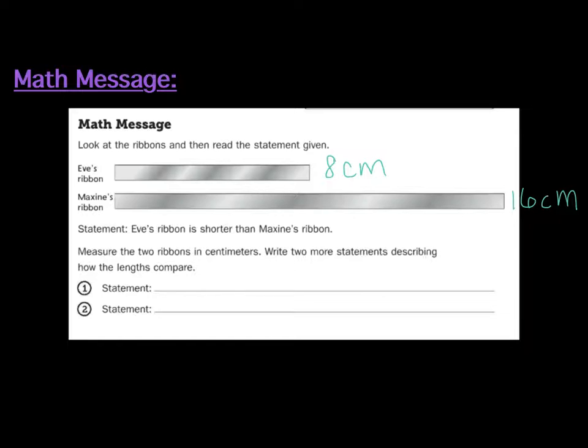Okay, so I went ahead and measured the ribbons for you. So let's say that Eve's ribbon is 8 centimeters and Maxine's ribbon is 16 centimeters. So we could write a statement that compares both of those ribbons by saying the length of Maxine's ribbon is 2 times the length of Eve's ribbon. We could write another statement that says Maxine's ribbon is twice as long as Eve's. Another statement would be Eve's ribbon is half the length of Maxine's because 8 is half of 16. So these are the kinds of statements that you are going to be learning how to write today with this lesson.